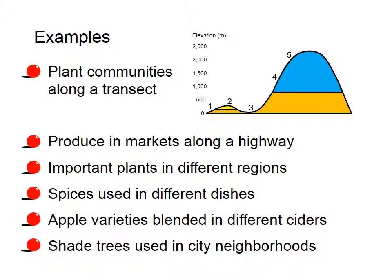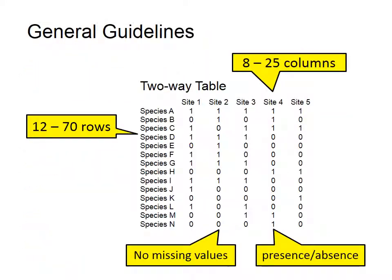The example used here looked at plant communities along a transect. There are many more situations that have a similar sort of data. Look for situations where you have multiple places or things, and each of these places or things has a different composition than the others — each of these situations might lend itself to using community analysis procedures. As you become more familiar with community analysis, you will see that the two-way table is the key to thinking about community analysis. If you can fit your data into this structure, there is a good chance that you will want to run a community analysis.